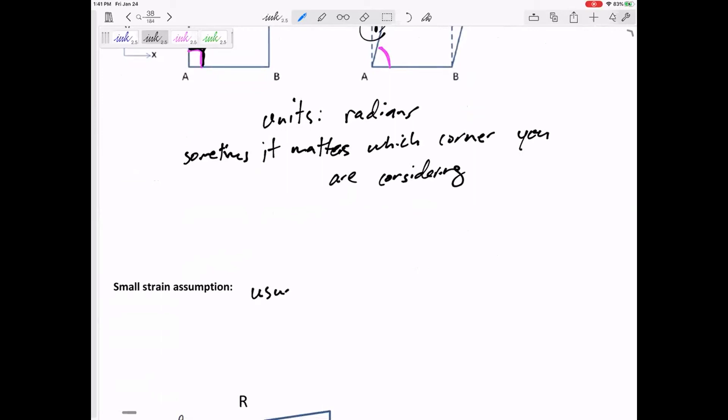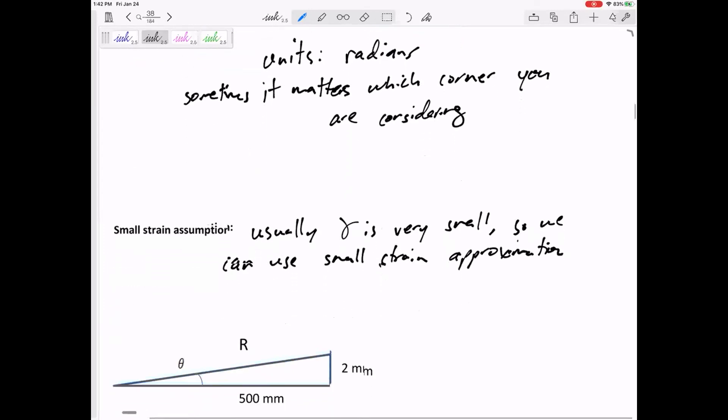And so let's say usually gamma is very small. So we can use the small strain approximation.